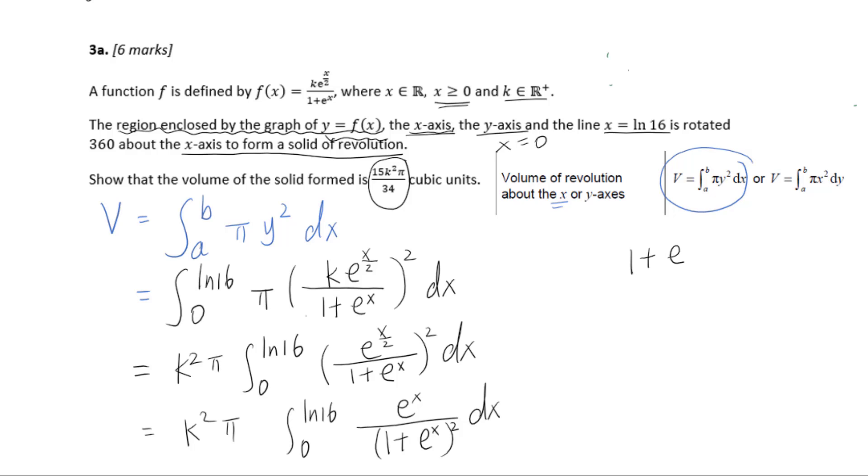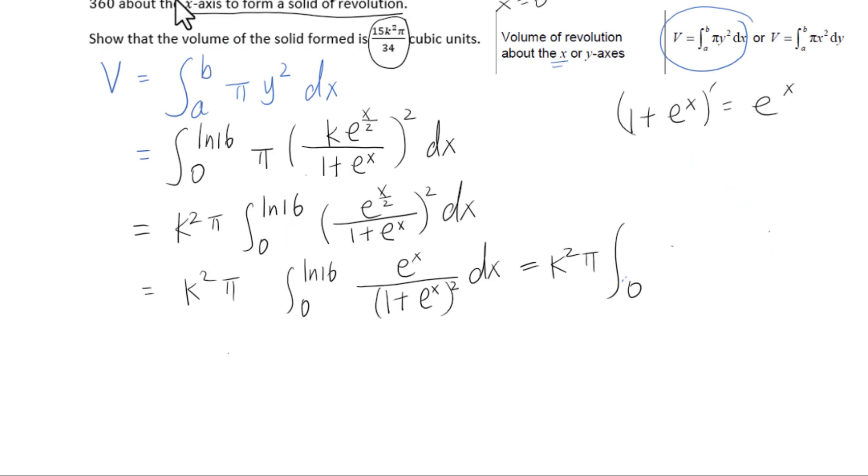Since 1 plus e to the x power prime equals e to the x power, we can use this formula: integral of f of x to the nth power times f prime of x dx equals f of x to the n plus 1 power over n plus 1 plus c.